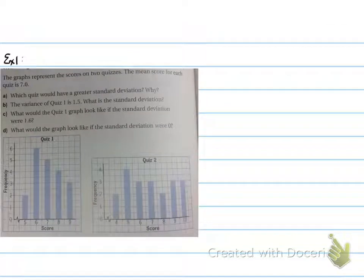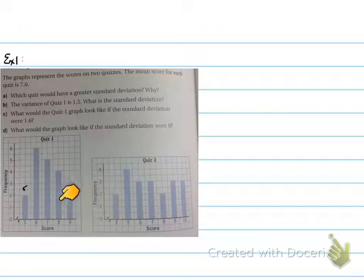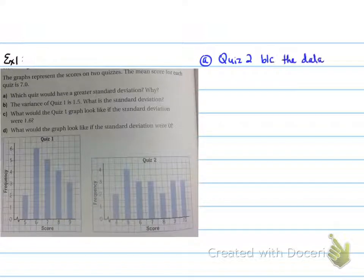Example 1: the graphs represent the scores on two quizzes. The mean score for each quiz is 7.0. Which quiz would have a greater standard deviation and why? Looking at the data, quiz one has values very close to the mean, whereas quiz two has more values on either side of the mean. Therefore, quiz two will have a greater standard deviation because the data is more spread out.